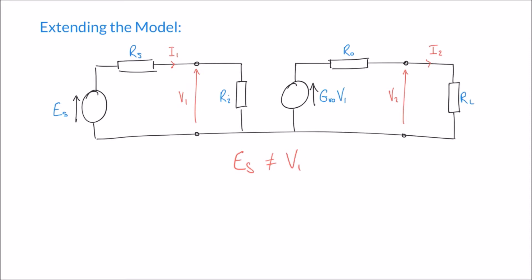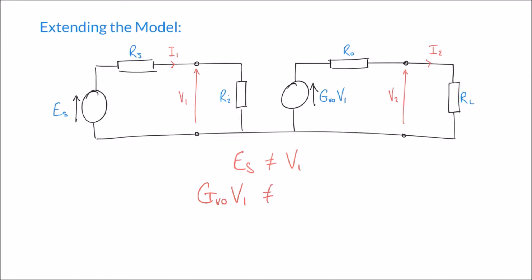On the right-hand side, our amplifier takes the voltage dropped across the input resistance and produces an output voltage GVO·V1. We can also see that GVO·V1 doesn't equal V2, the voltage dropped across the load — our final output voltage. Again, we have a simple potential divider arrangement here. The voltage produced by the amplifier, GVO·V1, is split between the output resistance RO and RL the load resistance. That's why we want RO to be as small as possible, so that most of this voltage is dropped across RL. So GVO·V1 does not equal V2.